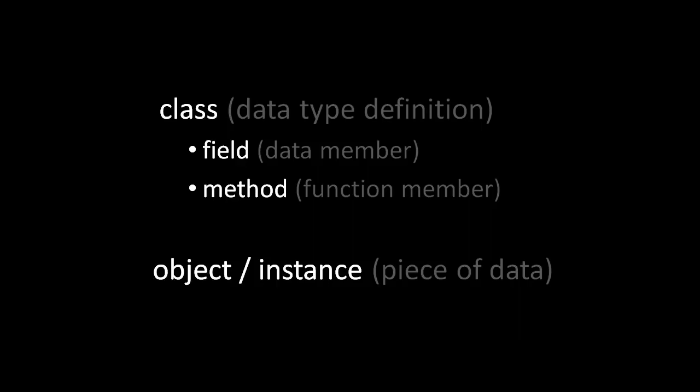The other kind of member of a class is called a method. A method is basically a function associated with that class. The idea is that these methods are the operations for acting upon the data — the fields of the class. A very important thing to understand is that when we instantiate a class and produce an instance, that instance object in memory gets its own fields separate from the fields of all other instances of the same class.